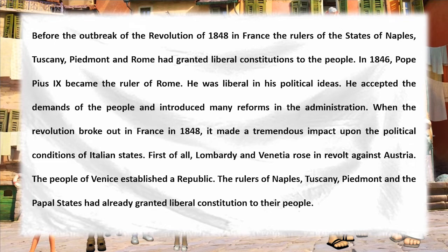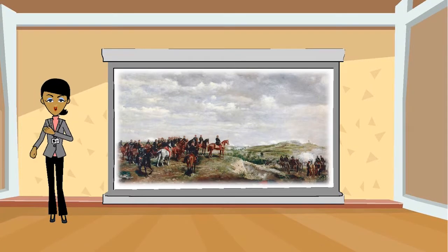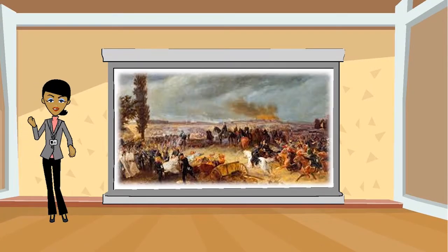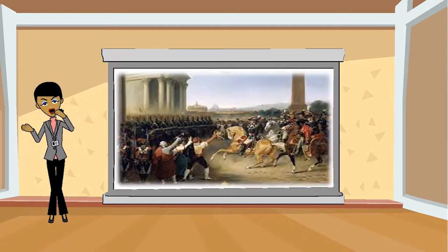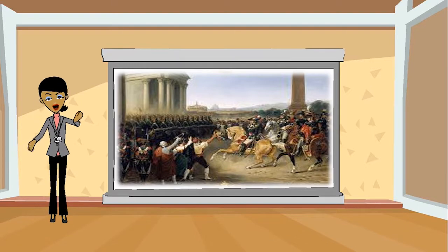First of all, Lombardy and Venetia rose in revolt against Austria. The people of Venice established a republic. The rulers of Naples, Tuscany, Piedmont, and the Papal States had already granted liberal constitutions to their people. The people of the Italian states demanded that their rulers should fight united against Austria, so the Italian states declared war against Austria under the leadership of Charles Albert, the king of Piedmont.